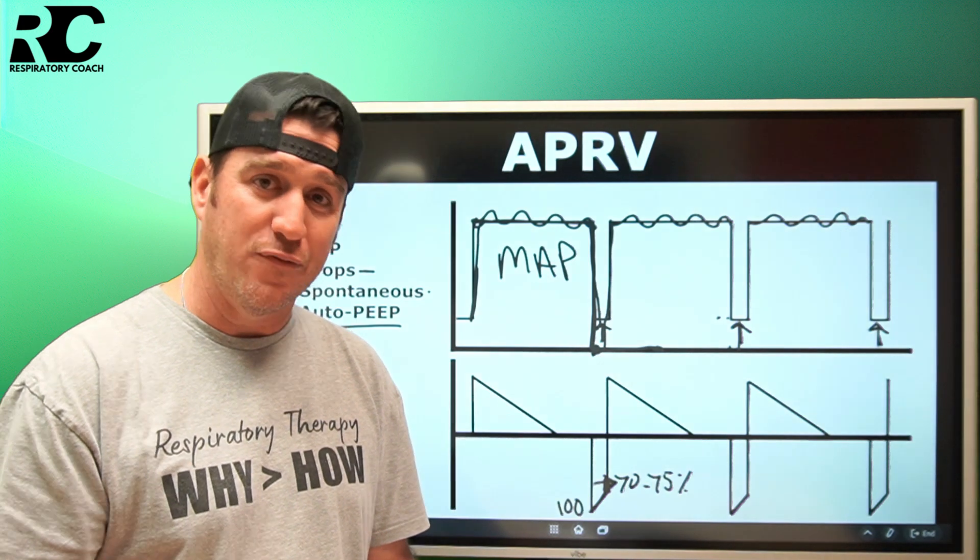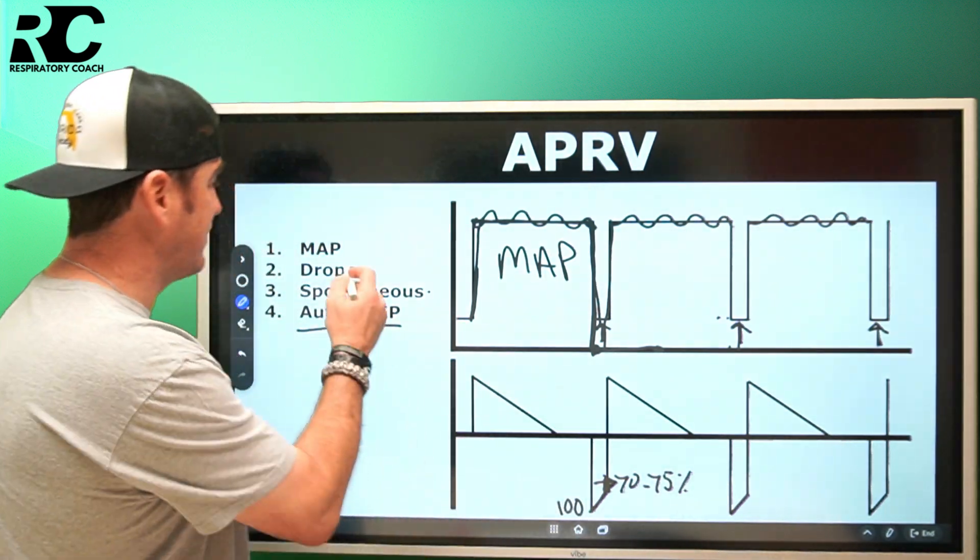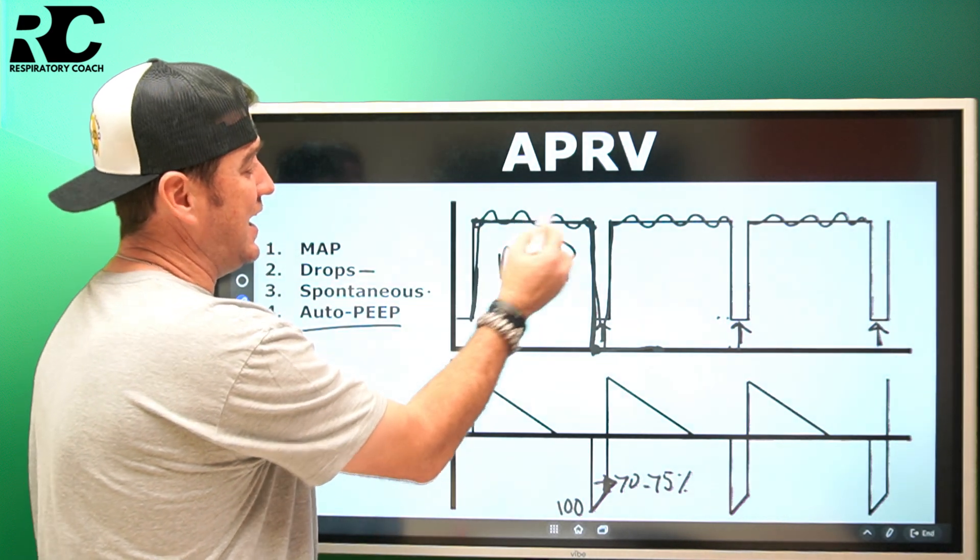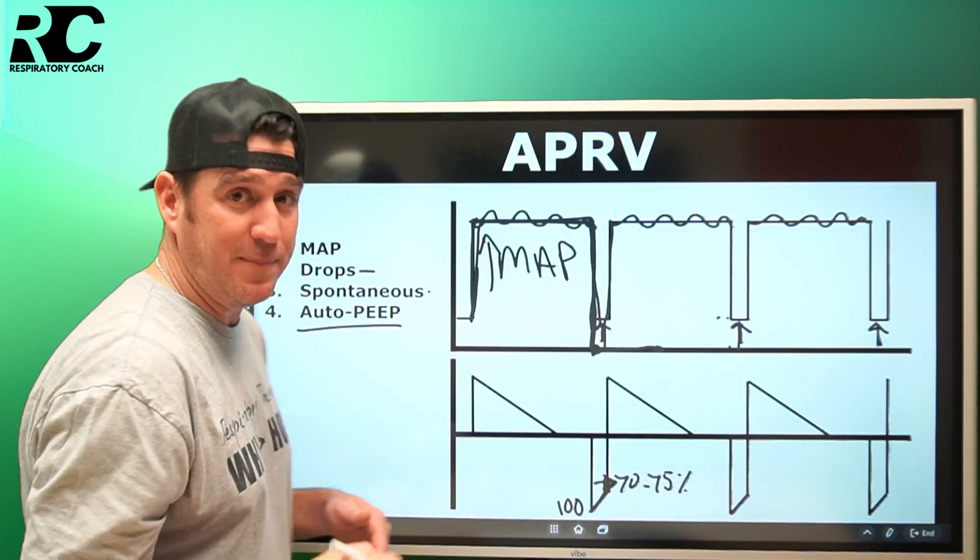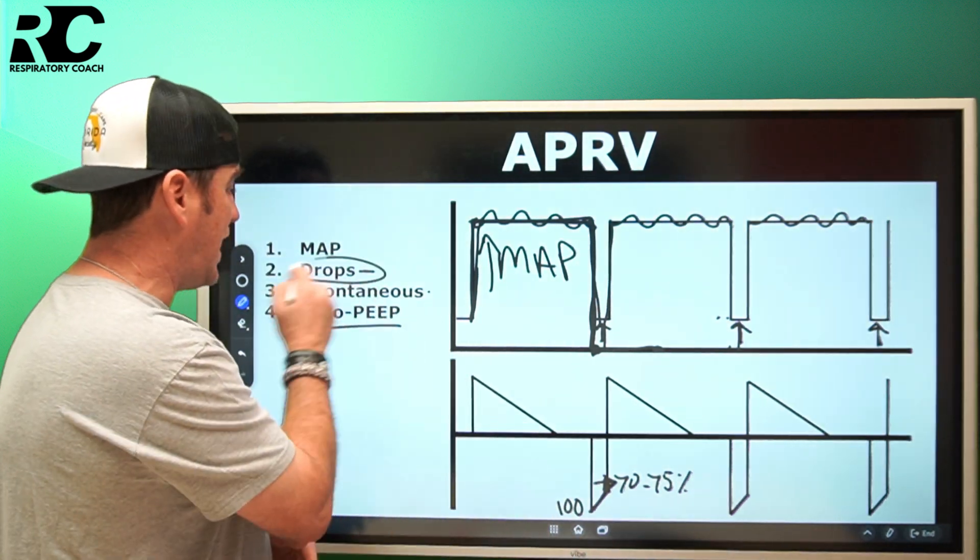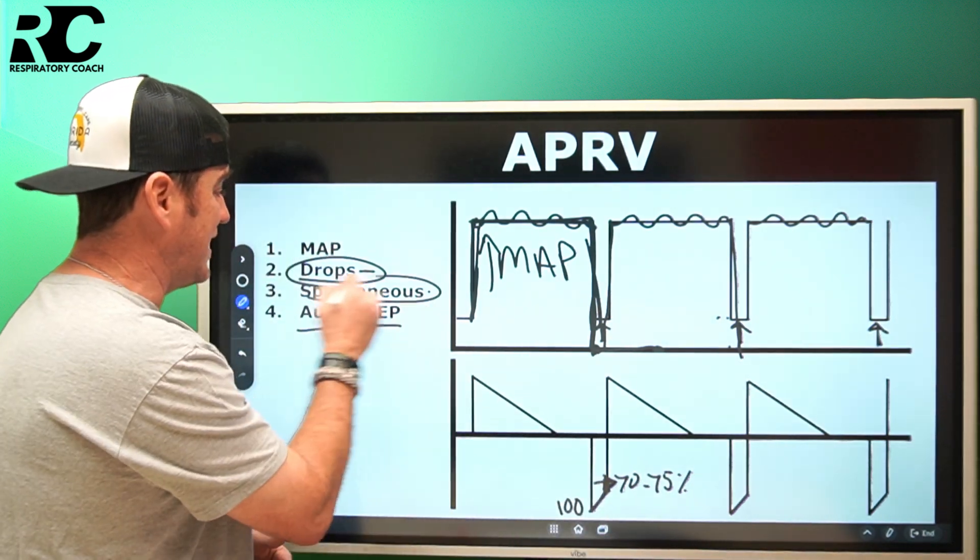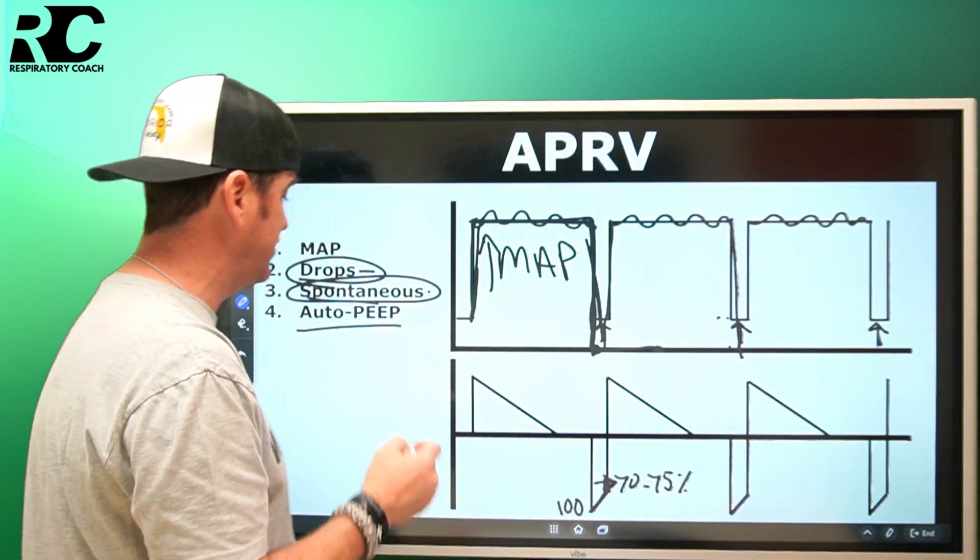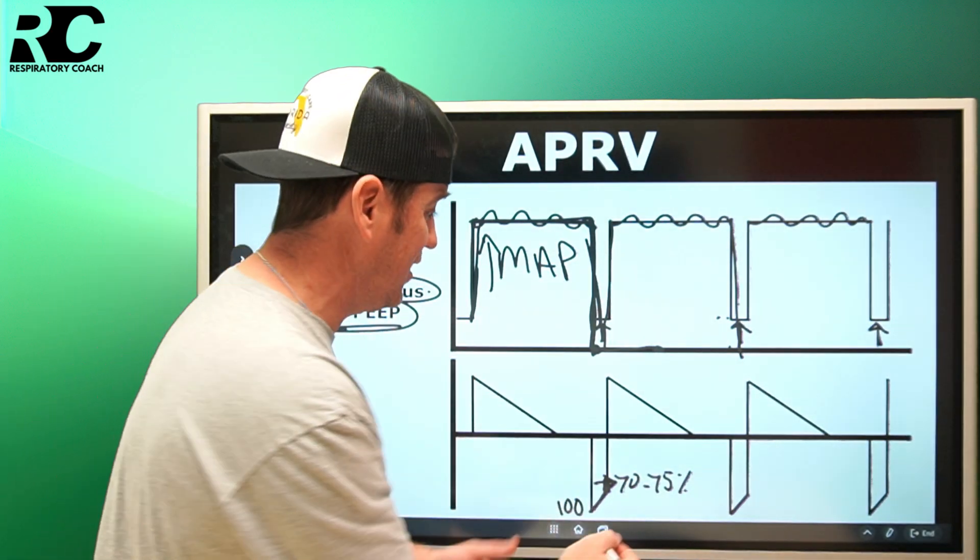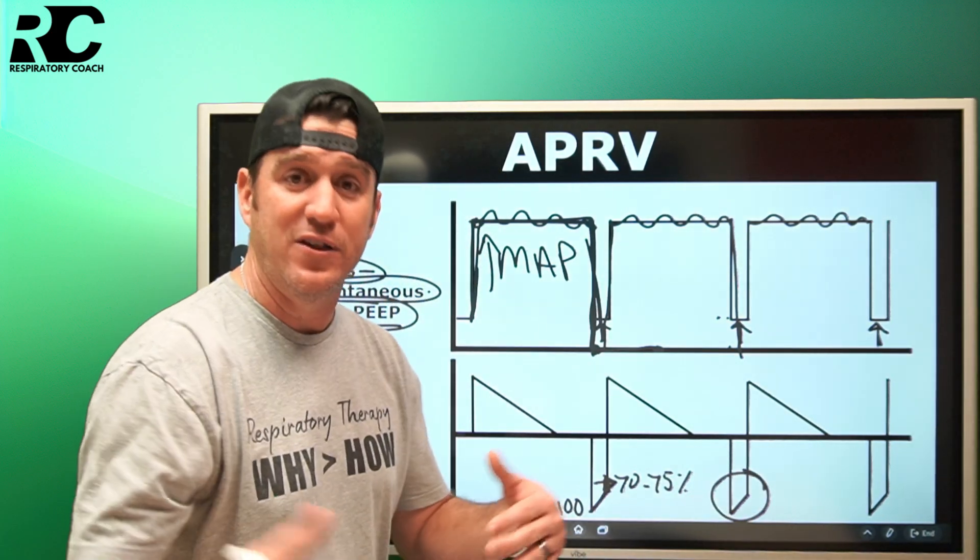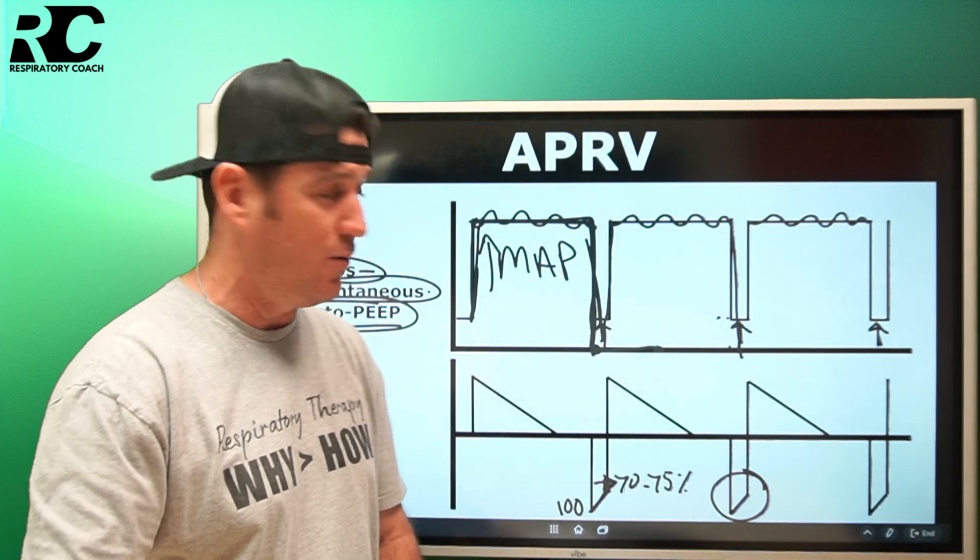Quick recap here. Remember your P-high and your time high establish the size of this box. The bigger this box, the higher the mean airway pressure. That's your oxygenation tool. The drops - every time we drop, we're going to get removal of CO2. This is going to aid us in ventilating our patients. We can allow for spontaneous breathing on the top of these high pressures. And then finally, auto PEEP is a part of the strategy. Don't come into a patient with APRV and go, oh my gosh, they're air trapping, I want to give them a longer expiratory time or I'm going to increase this time low because they're air trapping. I want to fix that. That's not going to work out well for you in this mode. It's designed to function based off of intentional auto PEEP.